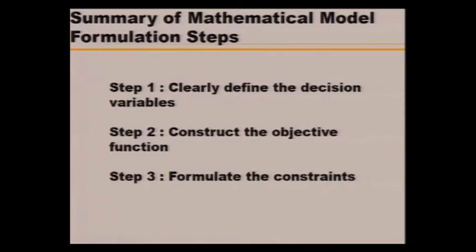The summary of mathematical model formulation: Step one — clearly define and identify the decision variables. Step two — construct the objective function, determining whether it is of maximization or minimization type using the given data. Step three — formulate the constraint components and non-negativity restrictions using the given data in mathematical expression form.